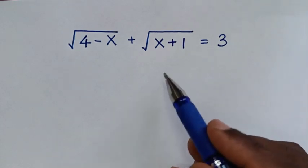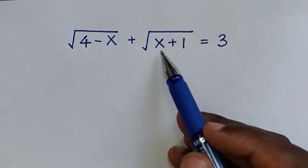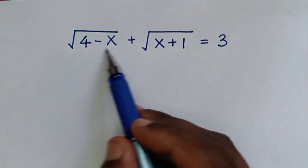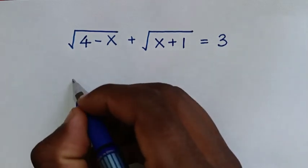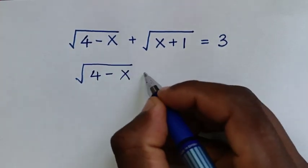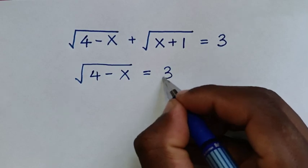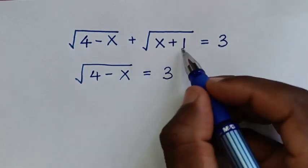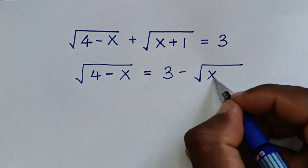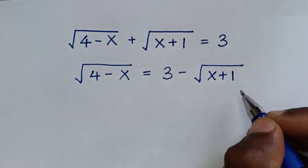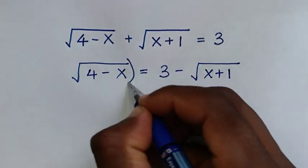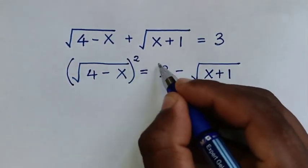In the first step, we will take the square root of (x plus 1) to the left side. So it will be: square root of (4 minus x) is equal to 3 minus square root of (x plus 1). Then to remove the square root, we will square both sides.